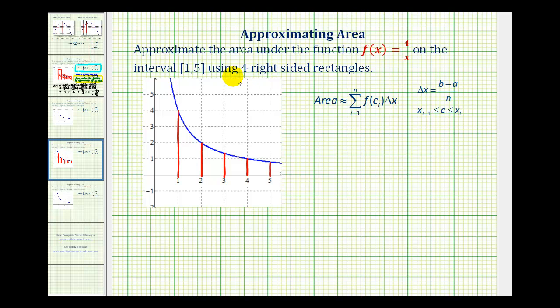Now to determine the height of each rectangle, we'll use the right side of each interval. For this first interval we'll use f(2) as the height. The height would be here, and then for the second interval the height would be f(3). For the third interval the height would be f(4), and for the fourth interval the height would be f(5).